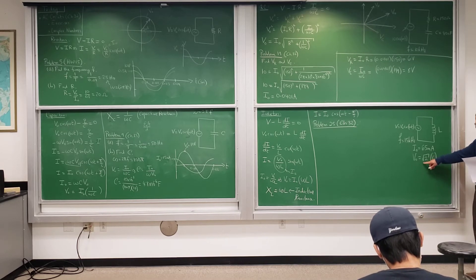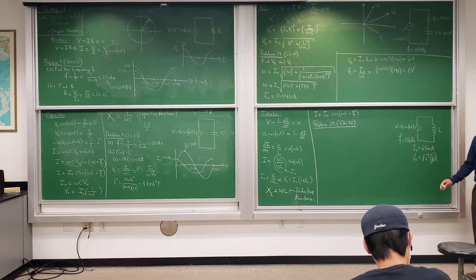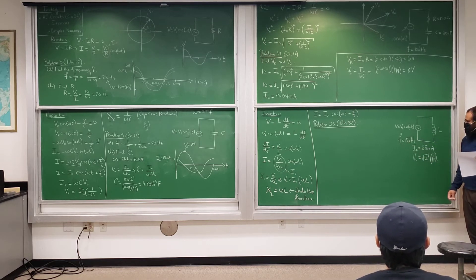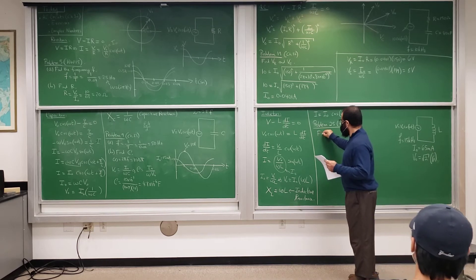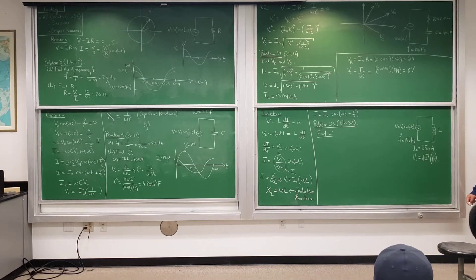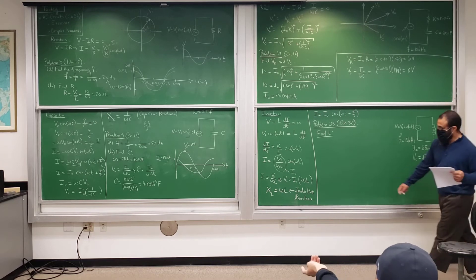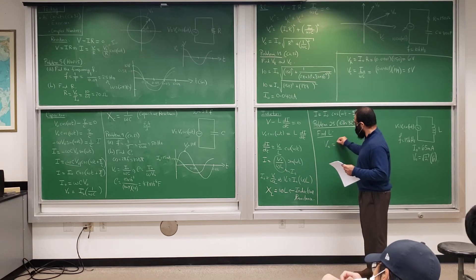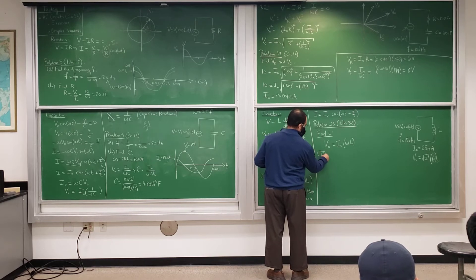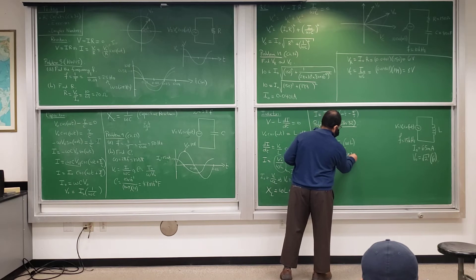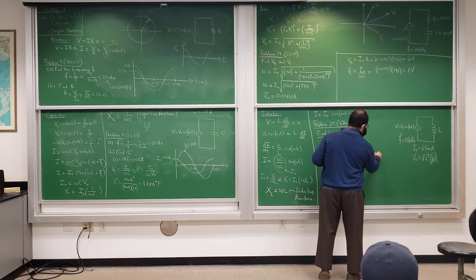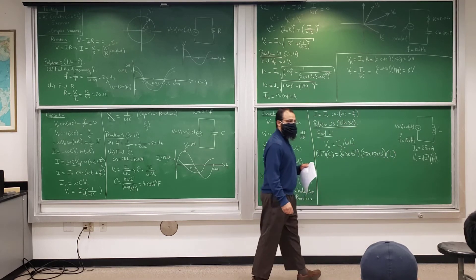The question asks for the inductance L. We know V0 equals I0 times omega times L. So V0 is square root of 2 times 6, I0 is 65 times 10 to the minus 3, and omega is 2 pi times 15 times 10 to the 3. Solving for L gives 1.4 times 10 to the minus 3 henries.